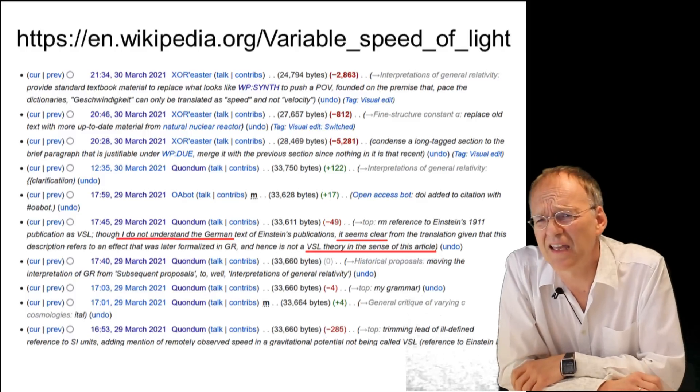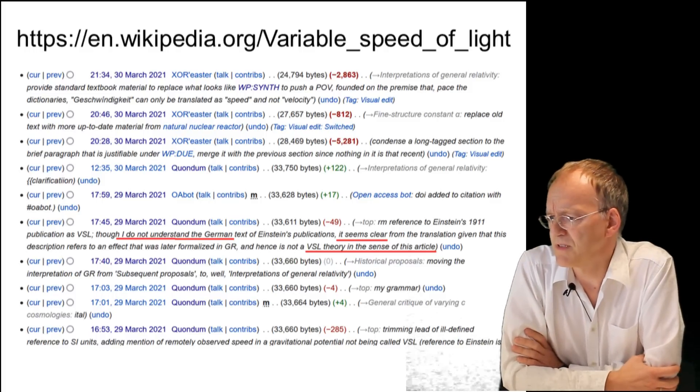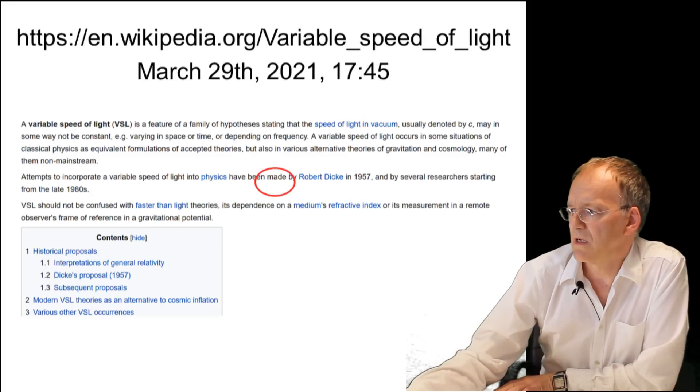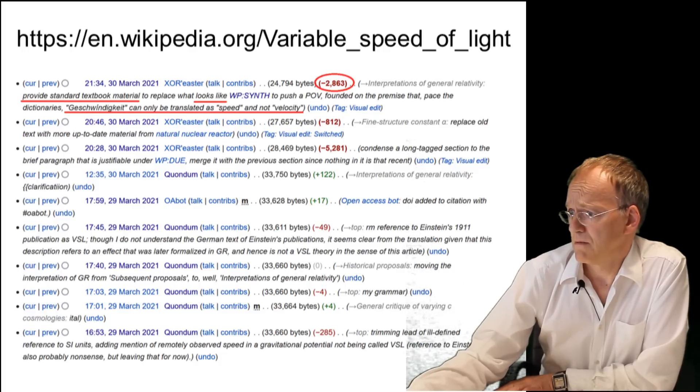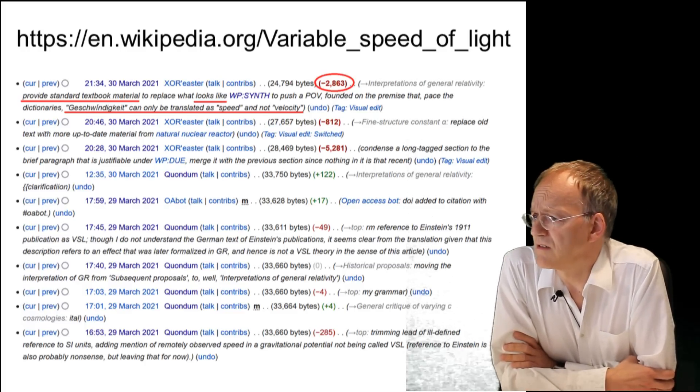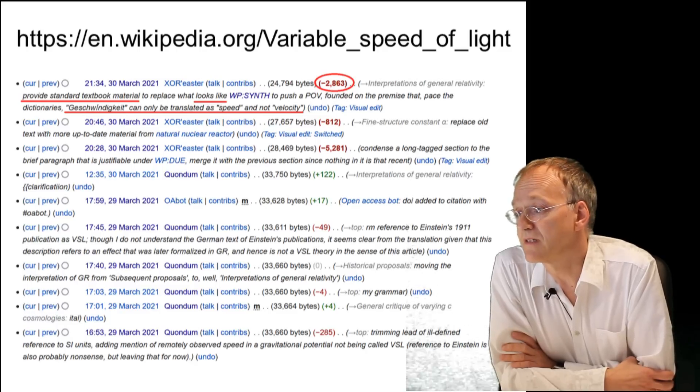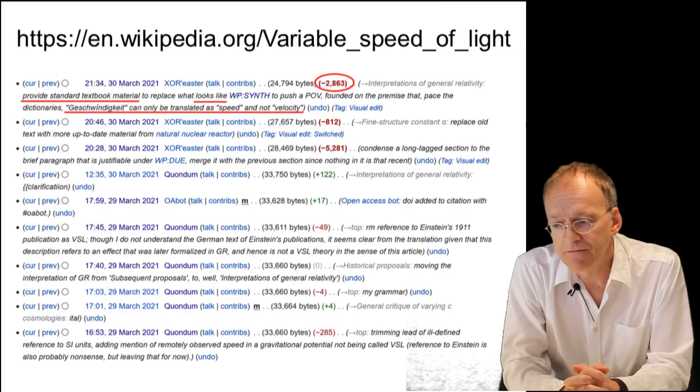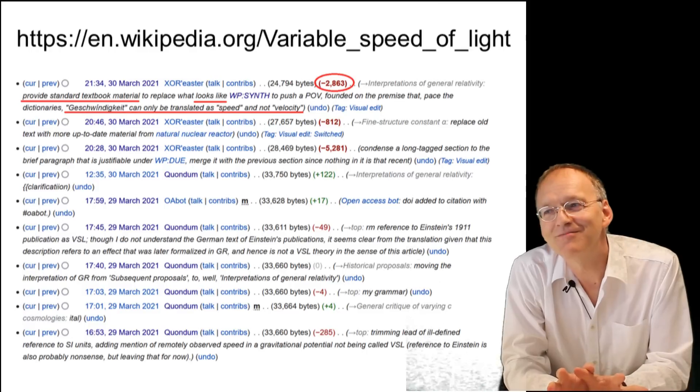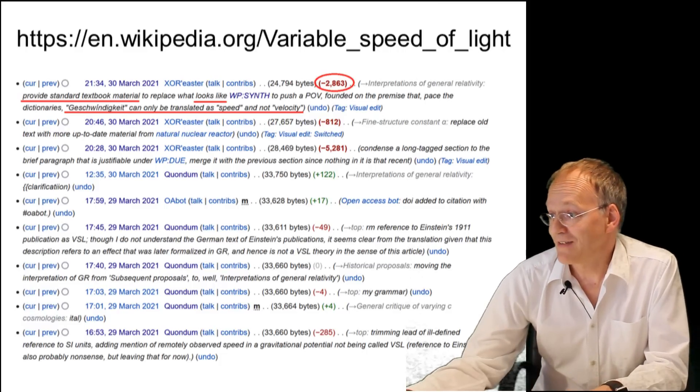Okay, well, is this a single pothead dabbling into theoretical physics? But look at this: three hours later another guy comes alongside. Now the reference disappeared. But a couple of hours later, another guy comes along and says, 'Okay, I added provided standard textbook material to replace what looks like...' And then he says 'geschwindigkeit can only be translated as speed and not velocity.' Yes, but my advice is: if you are unable or unwilling to learn a foreign language, you better don't mess with the history of theoretical physics.